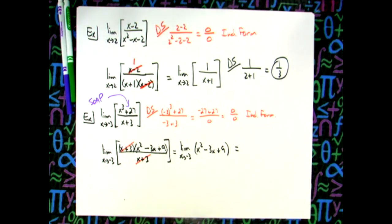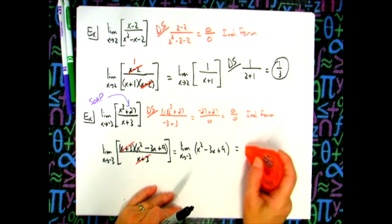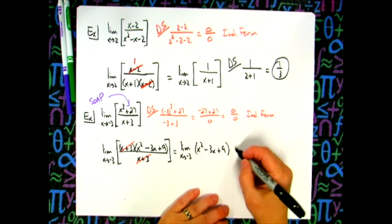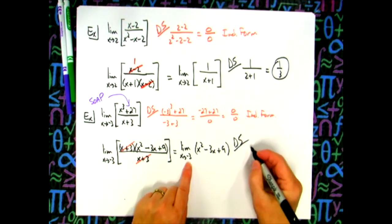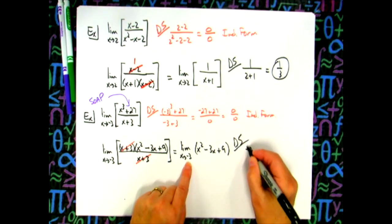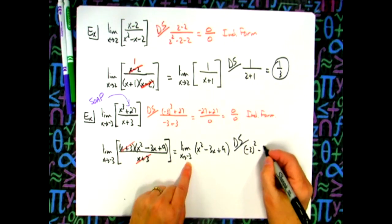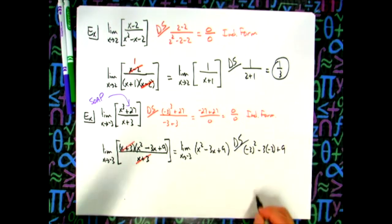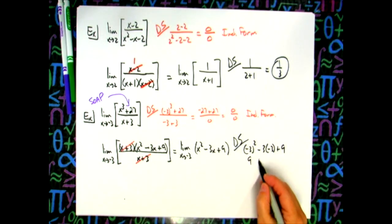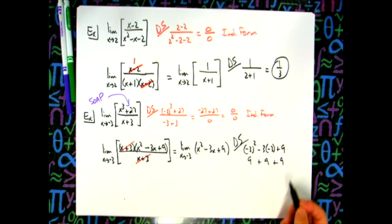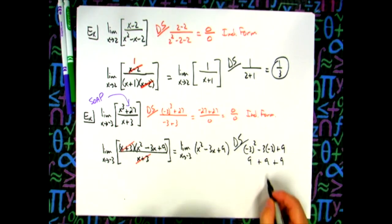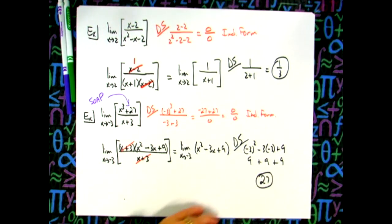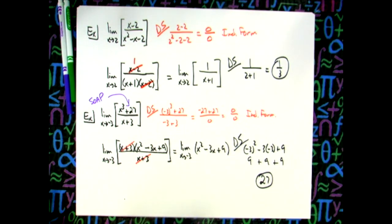Now do the direct substitution: (-3)²-3(-3)+9 equals 9+9+9, which gives 27.